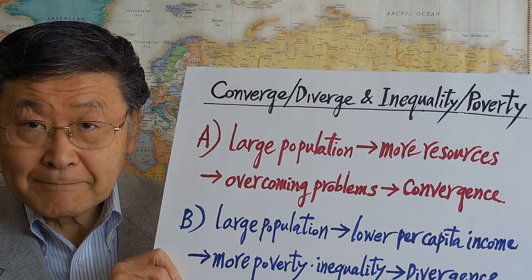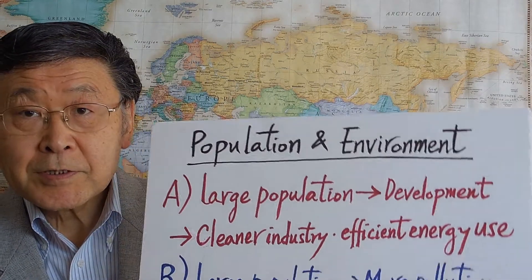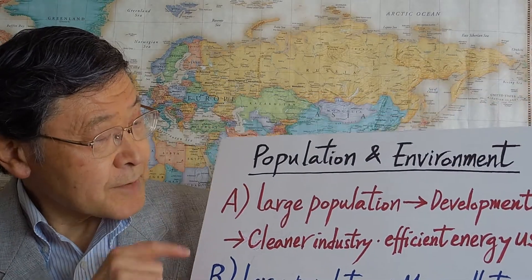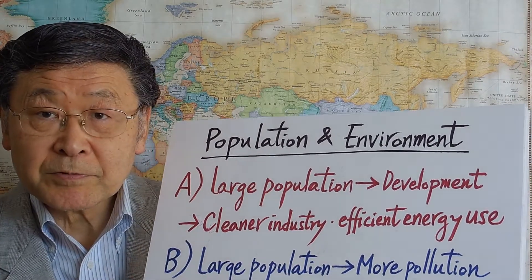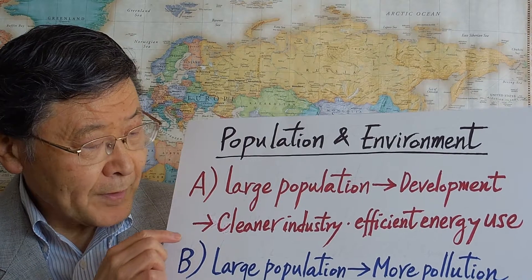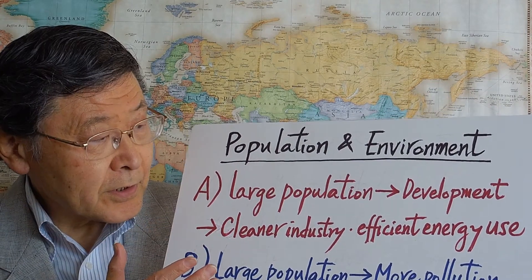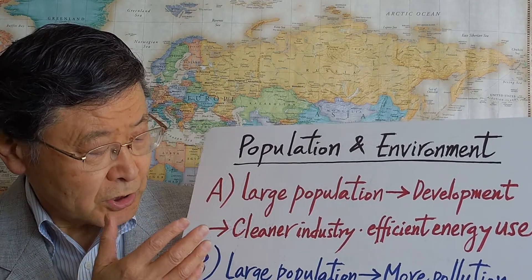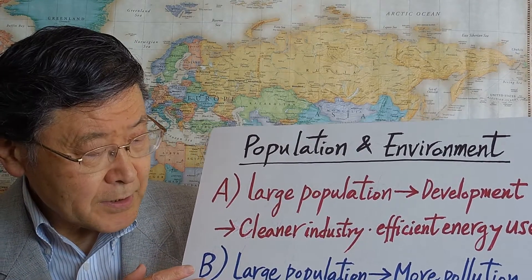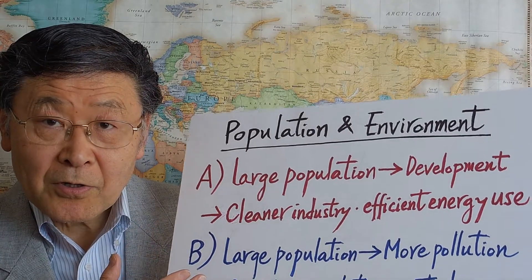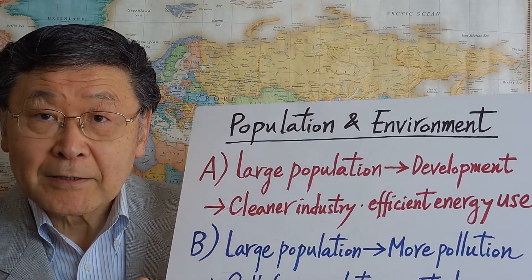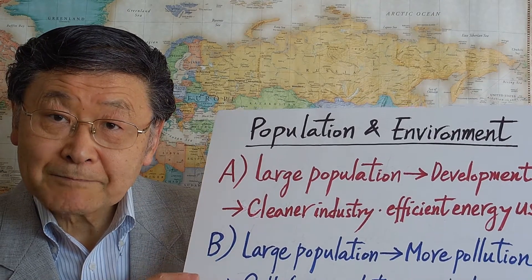That is the difference in opinion. Regarding population and the environment, we see a similar kind of opposing views. Side A, in favor of large populations, says it will provide more resources for further development, leading to cleaner industry and more efficient use of energy. Side B says large population will mean more pollution, which is not permissible, so population control will be needed.